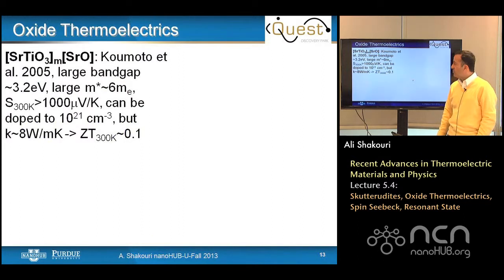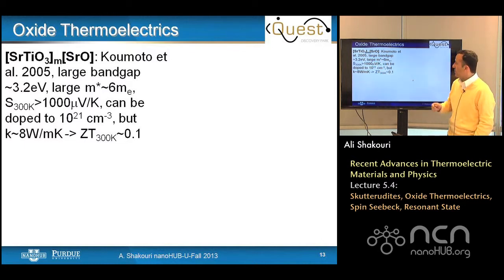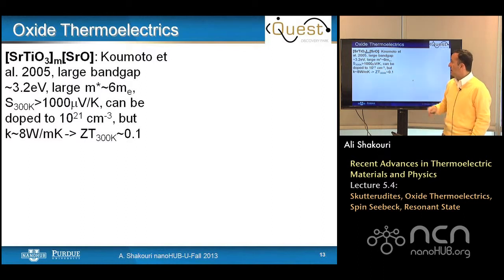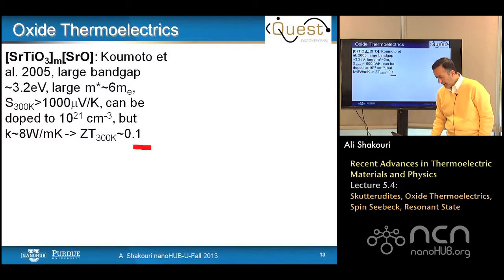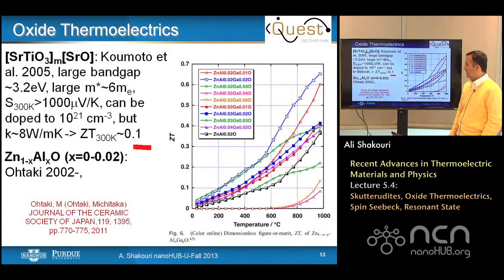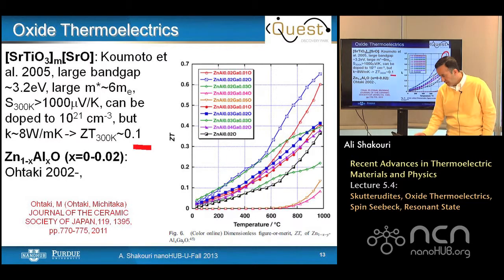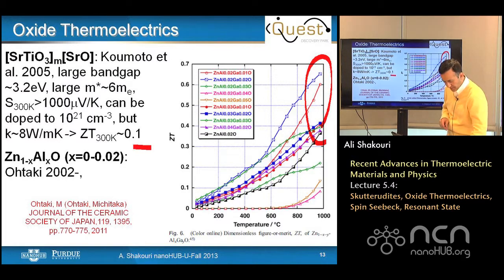Kumoto's group in Nagoya has done significant work on strontium titanate oxide and strontium oxide. These have large band gap and very heavy effective mass, giving a high Seebeck at room temperature; they can be highly doped to 10²¹. But high thermal conductivity keeps ZTs quite low. The zinc oxide family, studied by Mishitaka Otake, shows zinc aluminum oxide and aluminum gallium oxide with ZTs as high as 0.6 at 1,000°C, among the most promising oxide materials for high temperature.